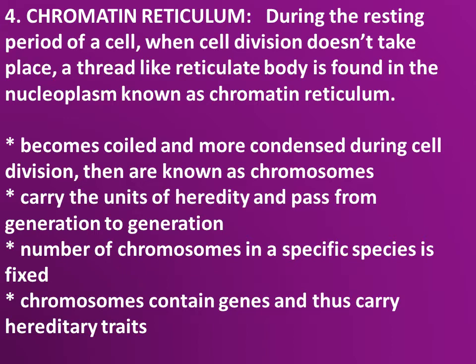4. Chromatin Reticulum. During the resting period of a cell, when cell division doesn't take place, a thread-like reticulate body is found in the nucleoplasm known as chromatin reticulum. It becomes coiled and more condensed during cell division, and is then known as chromosomes. Chromosomes carry the units of heredity and pass from generation to generation. The number of chromosomes in a specific species is fixed. Chromosomes contain genes and thus carry hereditary traits.